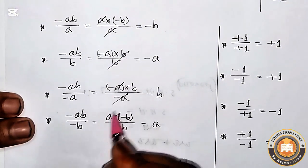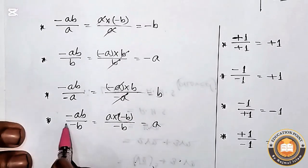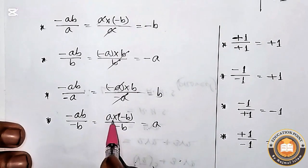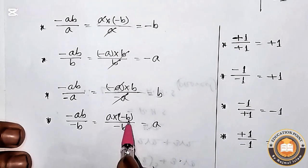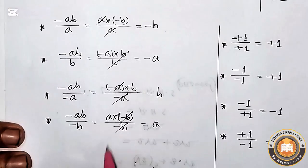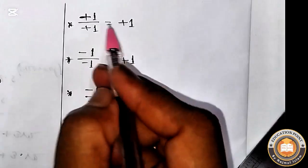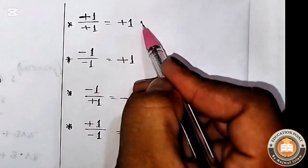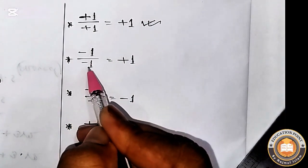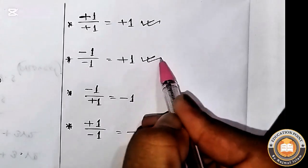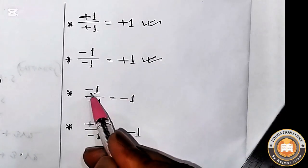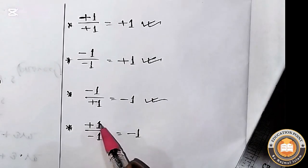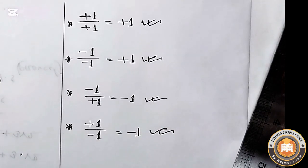Number three: (-ab) divided by (-a) means (-a × b) divided by (-a); (-a) and (-a) cancel, so the answer is b (positive). Sign rules: (+1)÷(+1) = +1; (-1)÷(-1) = +1; (-1)÷(+1) = -1; (+1)÷(-1) = -1.